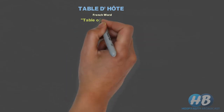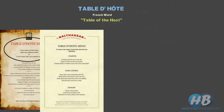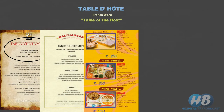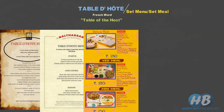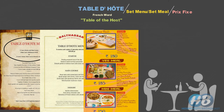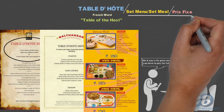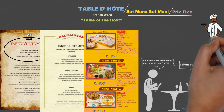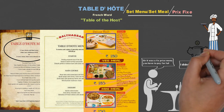Table d'hôte is also a French word which means table of the host. However, unlike à la carte it has a limited and set number of dishes with a fixed price. That's why it is also known as set menu, set meal, or prix fixe. The customer has to pay the full price of the set menu whether he eats a certain food or not. As it has a fixed menu, food is often cooked in advance and in bulk quantity, which reduces the service or delivery time and the price is also economical.